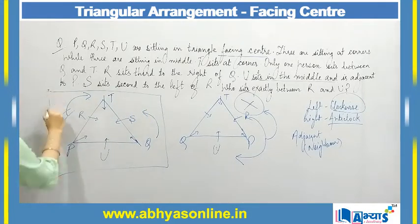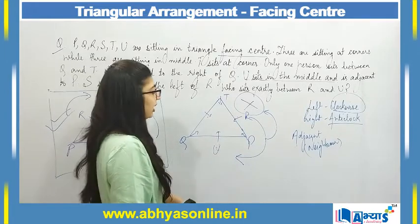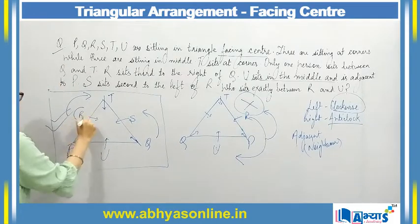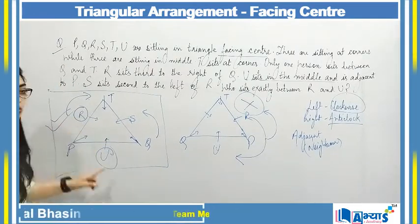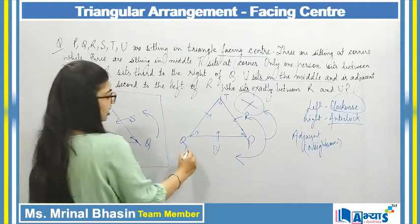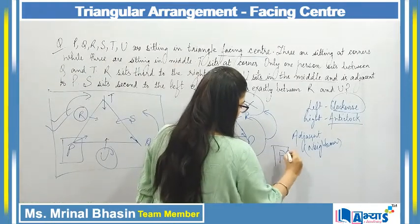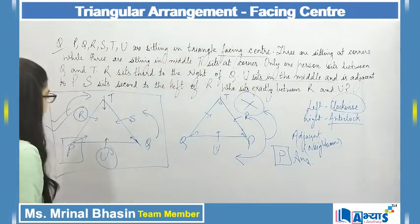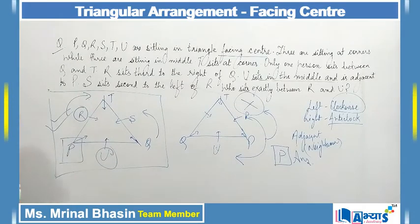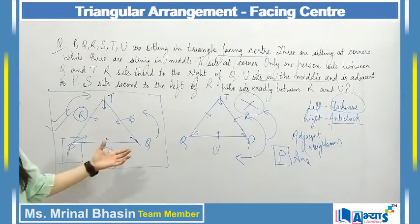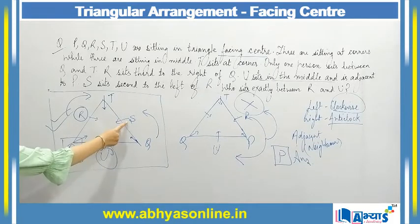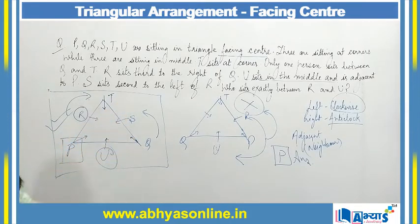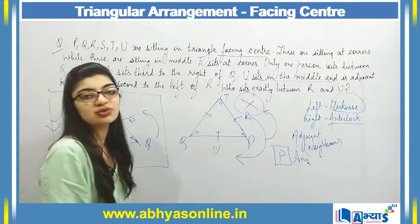Using the final diagram, we answer the questions. Who sits exactly between R and U? Looking at the diagram, P sits exactly between R and U, so P is our answer. If asked who sits third to the right of Q — right means anti-clockwise direction — counting one, two, three from Q anti-clockwise, the answer is R.